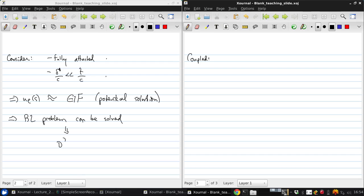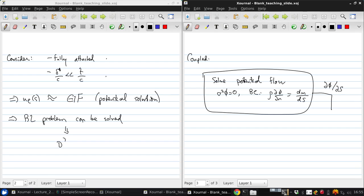Conceptually, the simplest way to deal with that coupling is using something like an iterative approach. You would solve, say, the potential flow first with the boundary condition given by the normal mass flux. And then the output of that would be basically the edge velocity gradient. And then you would solve the boundary layer equation using that.